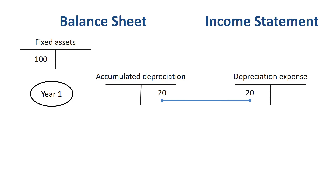If you want to know the book value or carrying value of the fixed asset at the end of year 1, you net together the historical cost of the fixed asset on the balance sheet and the accumulated depreciation on the balance sheet, which is $100,000 minus $20,000, so the net book value equals $80,000. This information is recorded in two separate accounts, as you want to preserve the information of what you originally spent to purchase the asset and what you have depreciated on it historically to date.